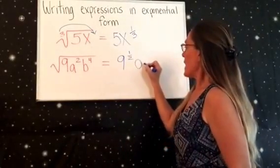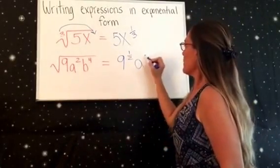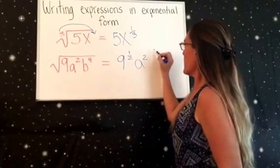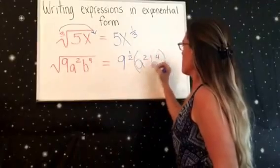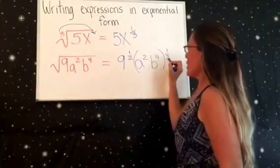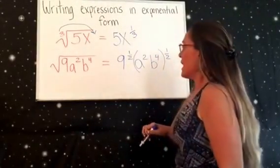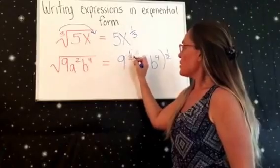And then we're going to take a and we're going to put the 2 next to that. And then the b to the 4th and put the one-half on the outside. So now you have 9 to the one-half.